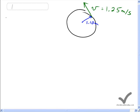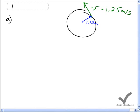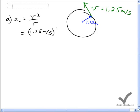We have the formula for the centripetal acceleration, so we'll do part A first. Centripetal acceleration is v squared over r, and we'll substitute in these numbers, 1.25 meters per second all squared, divided by 1.10 meters. This gives us 1.42045 meters per second squared.